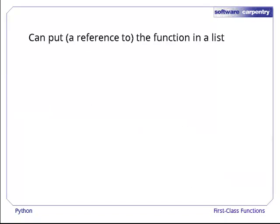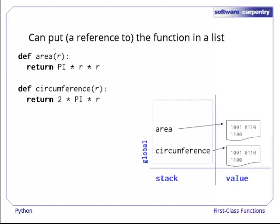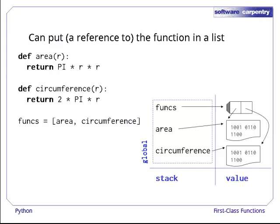Here's another thought. If the function is just data, can we put a reference to it in a list? Let's define two functions, area and circumference, each of which takes a circle's radius as a parameter and returns the appropriate value. Once those functions are defined, we can put them into a list like this. Of course, what we really mean is we're copying the references to the functions stored in the variables area and circumference into the list, so that its first and second elements refer to the same blobs of instructions. We can now loop through the functions in the list, calling each in turn. Sure enough, the output is what we would get if we called area and then circumference with the parameter 1.0.